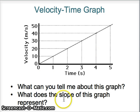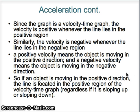But if the graph dips below the x-axis, that's different. The velocity is negative whenever it lies in a negative region — it doesn't mean the object is going slow, it means it's moving in a negative direction, or left or down. Positive velocity means the object is moving in a positive direction; negative velocity means it's moving in a negative direction. An object moving in a positive direction will have its line in the positive region of the velocity-time graph. Even if the line is sloping down, it's still moving in a positive direction as long as it stays above the x-axis.